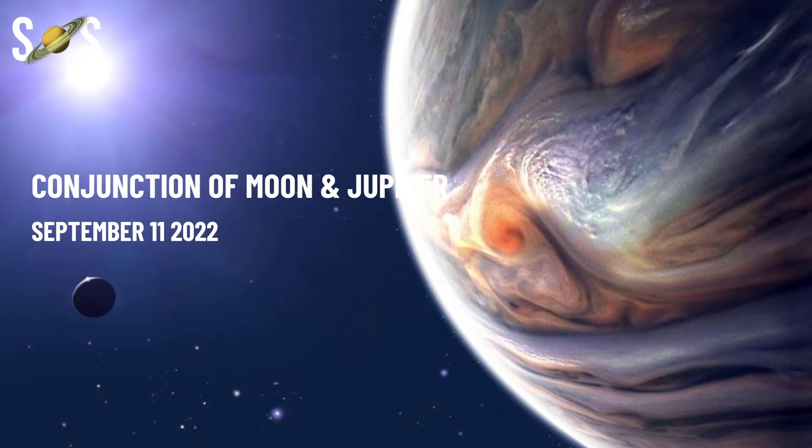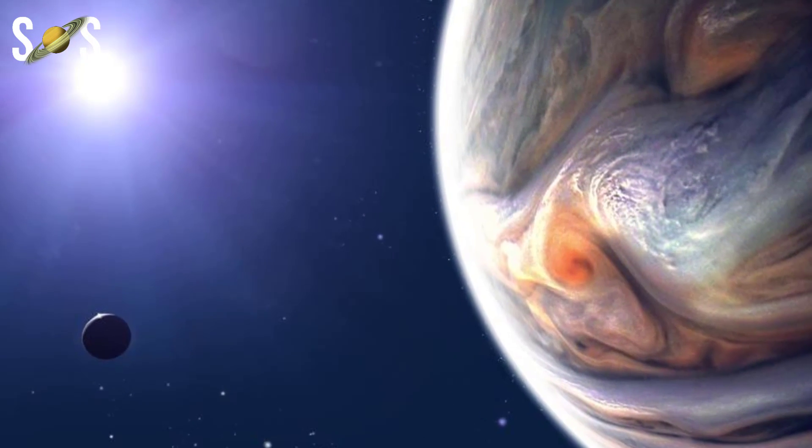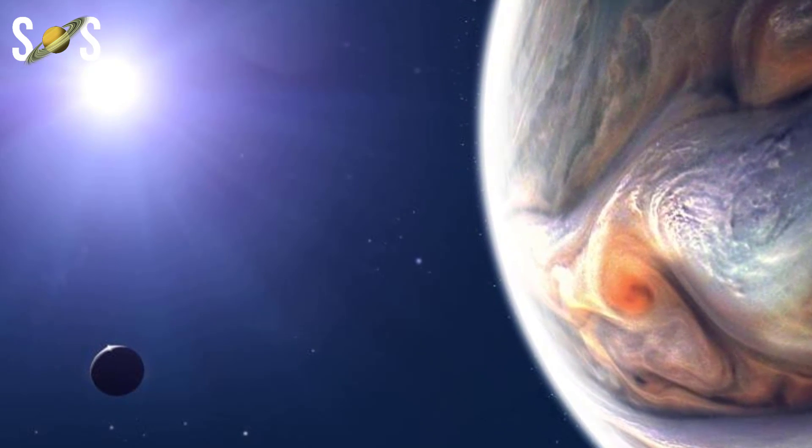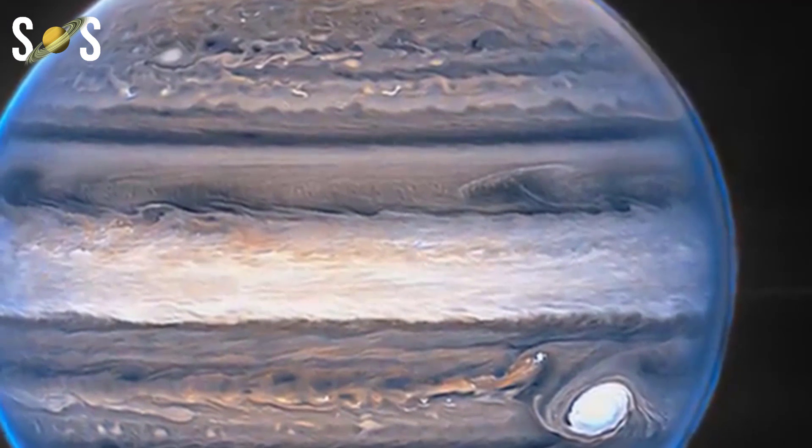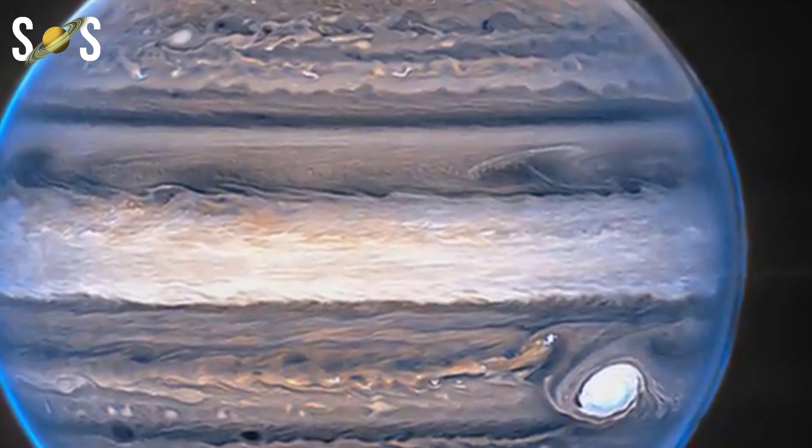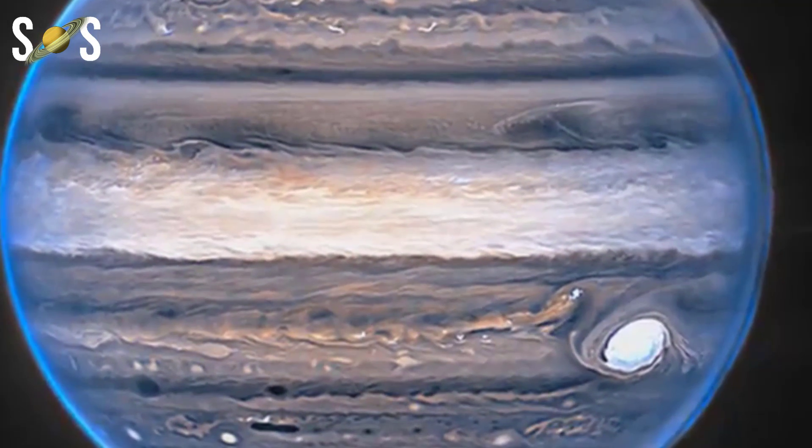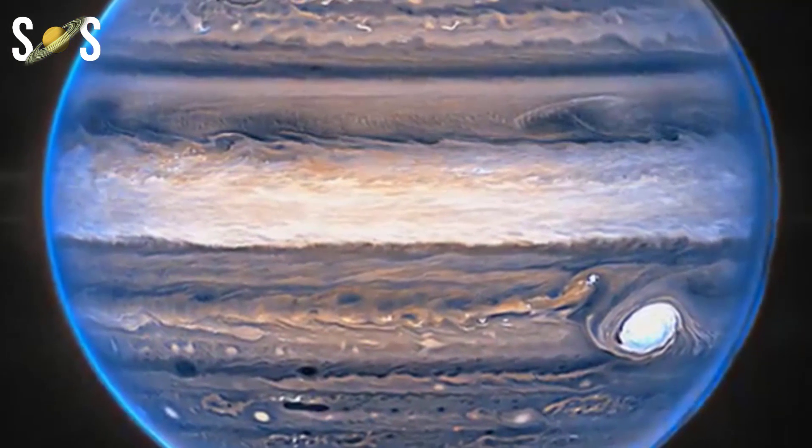September 11th, conjunction of the moon and Jupiter. Next up is Jupiter's first great viewing opportunity of the month, one of two. On the night of September 11th, the moon and Jupiter will be in conjunction and appear close together in the sky.